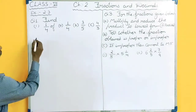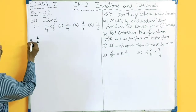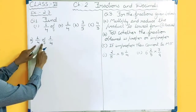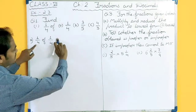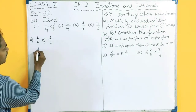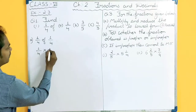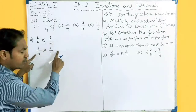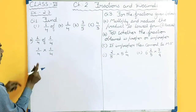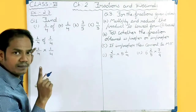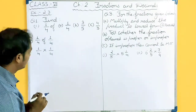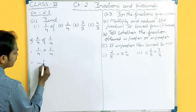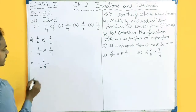What you have to find? One fourth of one upon four. 'Off' means multiply. So in the second step, replace 'off' with a multiplication sign. One upon four multiplied by one upon four. This is your numerator, this is your denominator. Your numerator will be multiplied by numerator and denominator will be multiplied by denominator. One multiplied by one gives one, and four fours are sixteen.